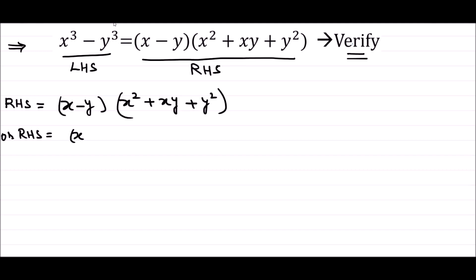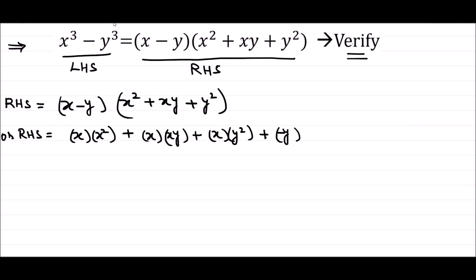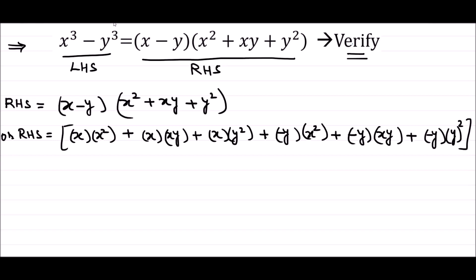Multiplying x through the bracket: x into x square gives x cube, plus x into x y gives x square y, plus x into y square gives x y square.